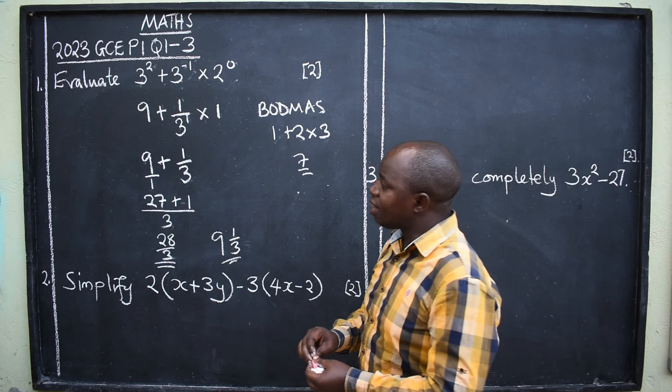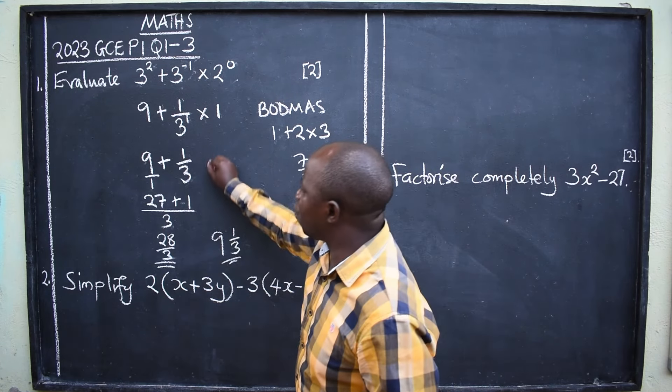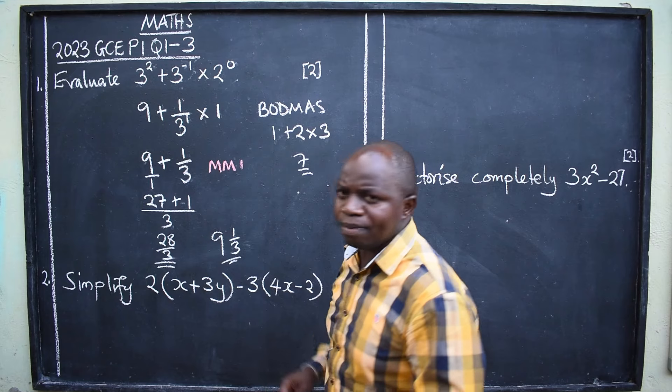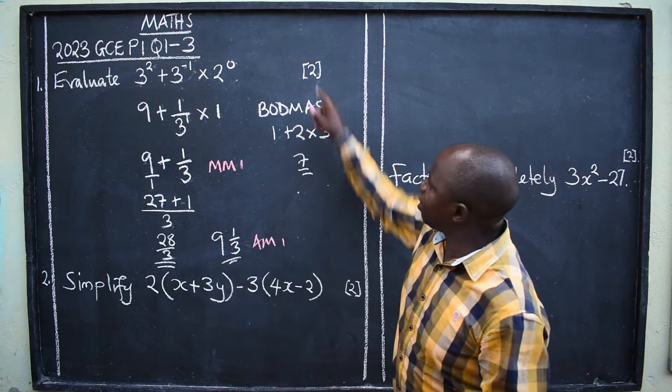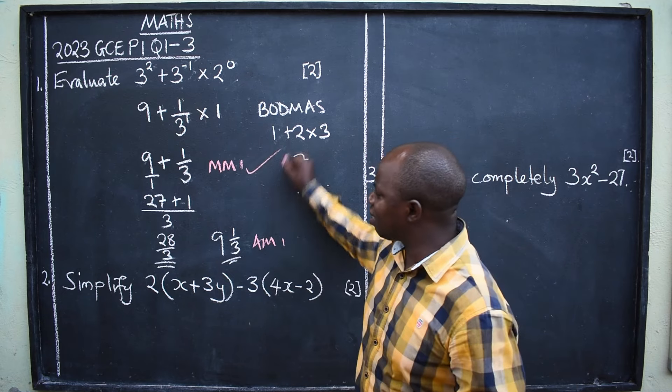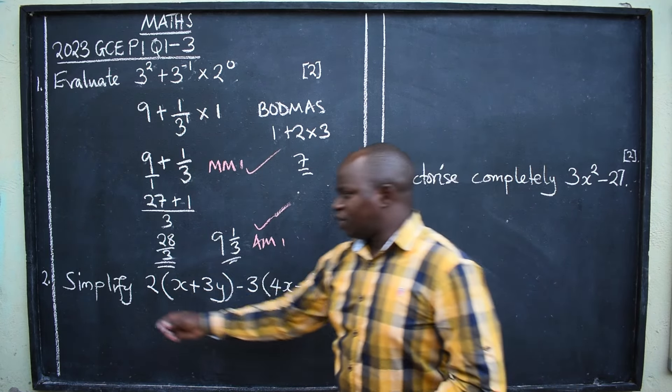How do you get the two marks here? So we are going to say the method mark that you are able to show the work will give you what we call method mark one. And the answer mark here will be given. You get the two marks. Just like that. Very simple. We'll give you that.